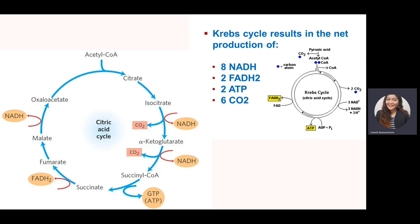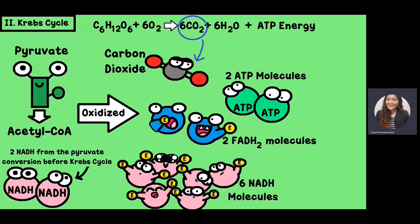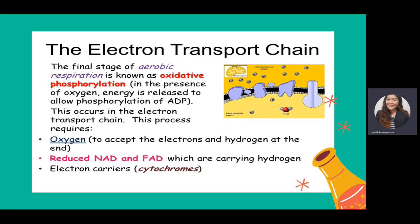The 6 carbon dioxide molecules are released as waste products. Pyruvate has acetyl-coenzyme A attached to it, and through many processes it is oxidized to produce NADH, FADH, ATP, and carbon dioxide. The electron transport chain is the final stage of aerobic respiration, also known as oxidative phosphorylation. In the presence of oxygen, energy is released to allow phosphorylation of ADP — this is where ADP is phosphorylated to become ATP.